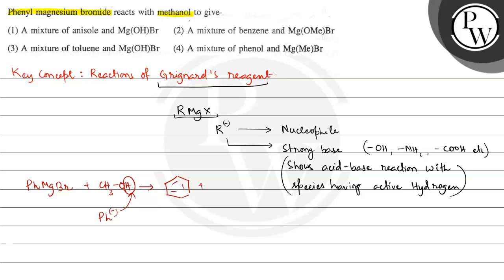Along with benzene, we will get methanol magnesium bromide — Mg(OMe)Br. So the products are benzene and Mg(OMe)Br. Option 2 states that a mixture of benzene and Mg(OMe)Br will be obtained, so option number 2 is the correct answer. I hope you understood the concept well. Best of luck!